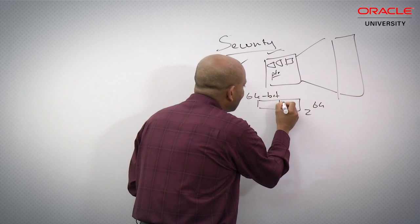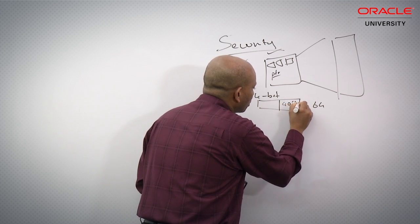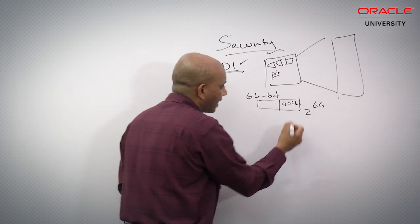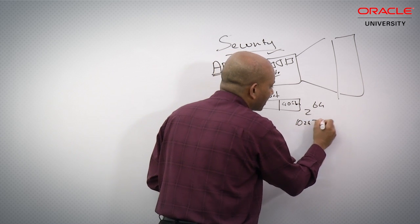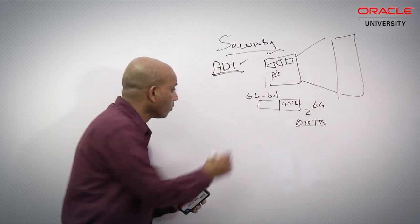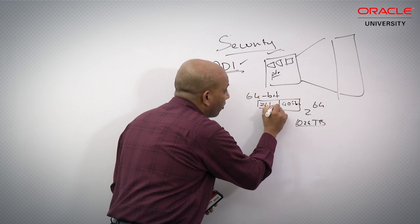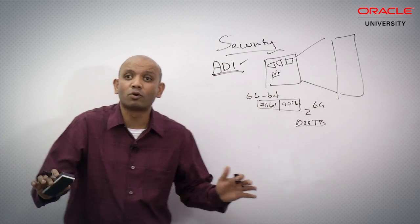So what we typically need, we need about 40 bits to do addressing, and that's still pretty high. That's still about 1024 terabytes of RAM. That's still pretty high, which means you have basically 24 bits of address space sitting around doing nothing.